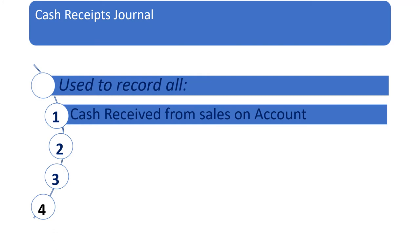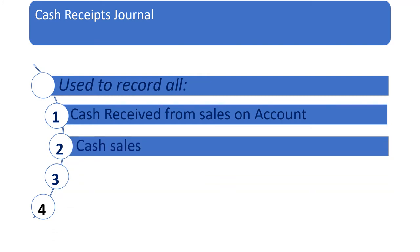A sale on account is when the customer comes to you, gets the goods, but does not pay right away. They pay after the time of sale, which is mostly 30 days. So when they pay, you as an accountant will have to record a cash receipt journal.